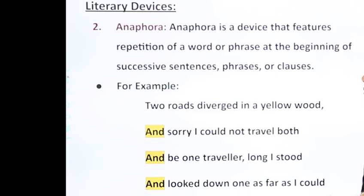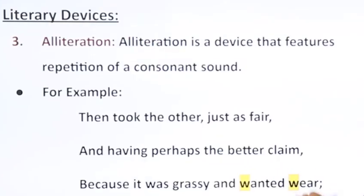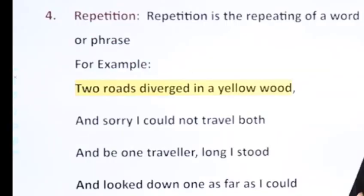Third is alliteration, which is a device that features repetition of a consonant sound. For example, 'because it was grassy and wanted wear' — here 'wanted' and 'wear' have the repetitive consonant sound of 'w.'